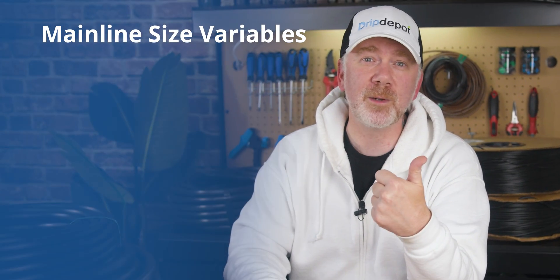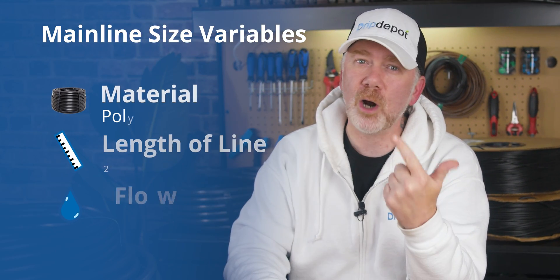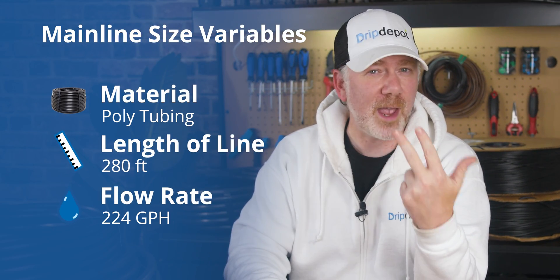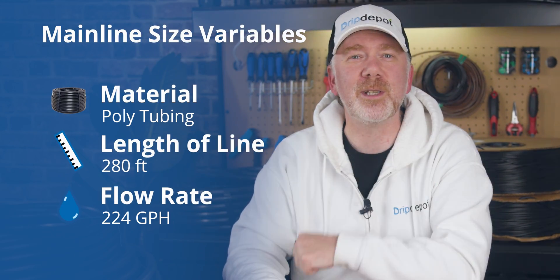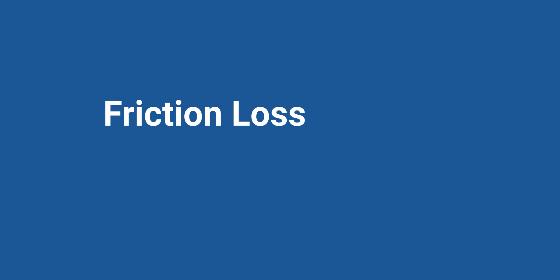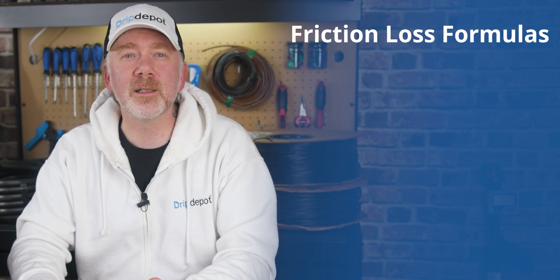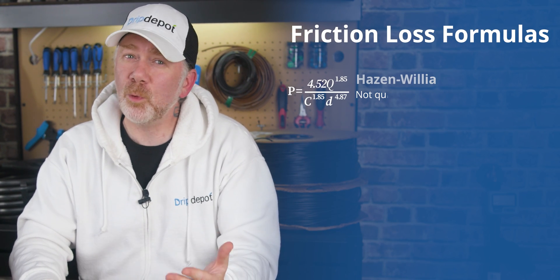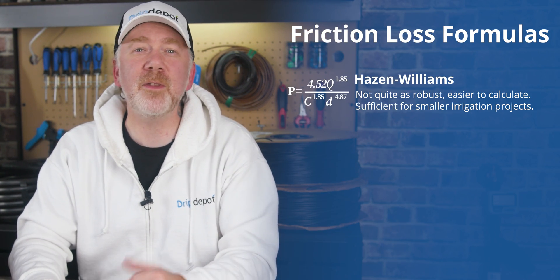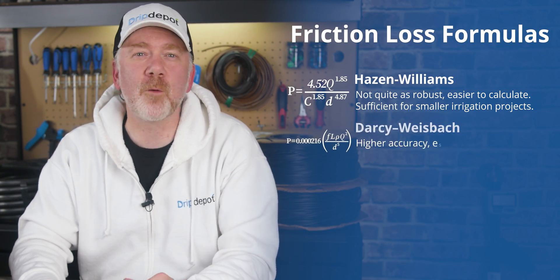We now have our three variables: system flow rate, line length, and the material we're using. Let's start using these three variables to first determine our system's friction loss. There are two formulas commonly used to determine friction loss: the Hazen-Williams formula and the Darcy-Weisbach formula. Our online calculator uses the Hazen-Williams formula.